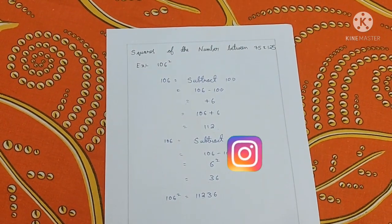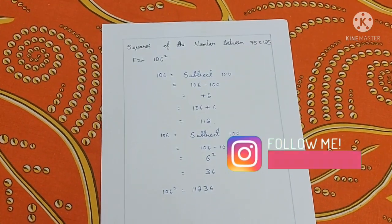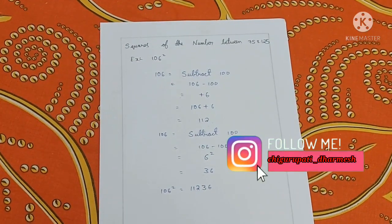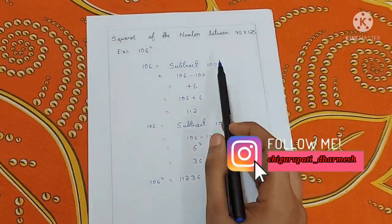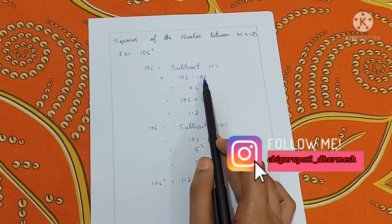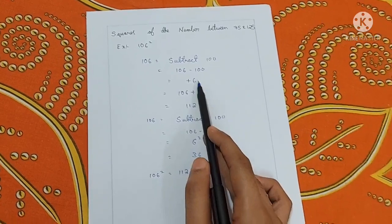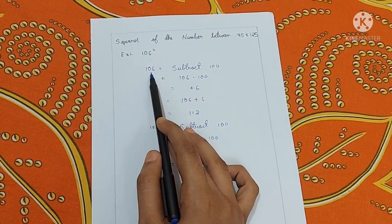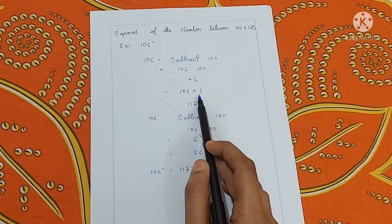To find the squares of numbers between 75 and 125, let's take an example as 106 square. The first step is subtract 100. That is 106 minus 100 which gives plus 6. Now add the 6 to the number. That is 106 plus 6 equals 112.